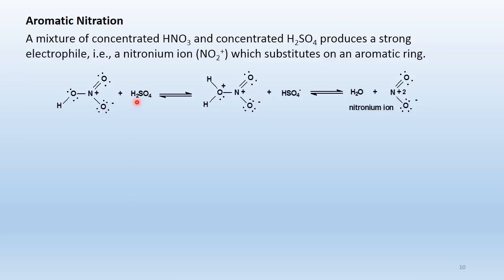Despite being protonated only slightly, nitric acid can be protonated on the oxygen that allows the reaction to proceed. Protonation of that oxygen produces an oxonium ion, which dehydrates — water is a good leaving group — producing the very powerful nitronium ion, NO2⁺.